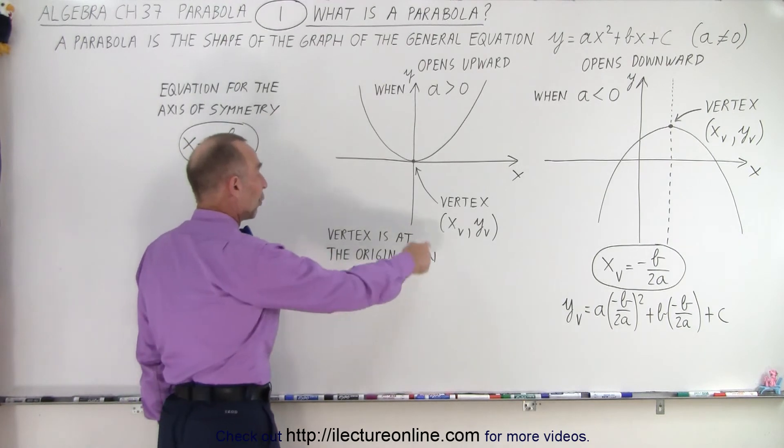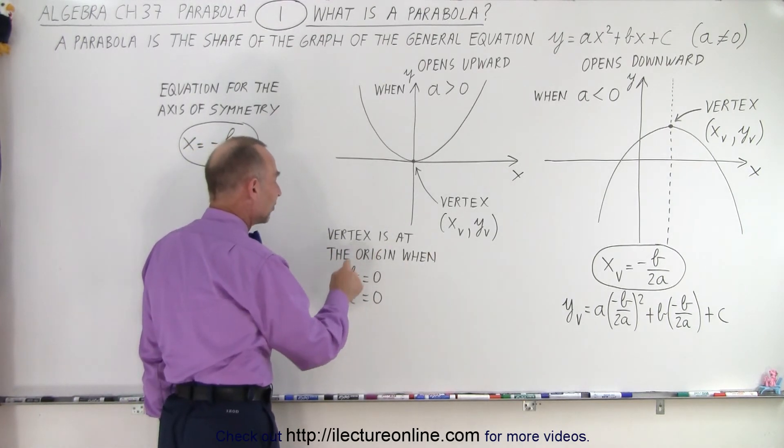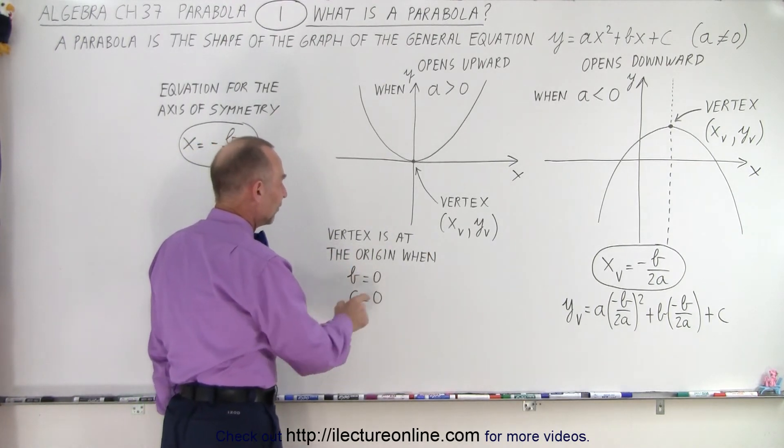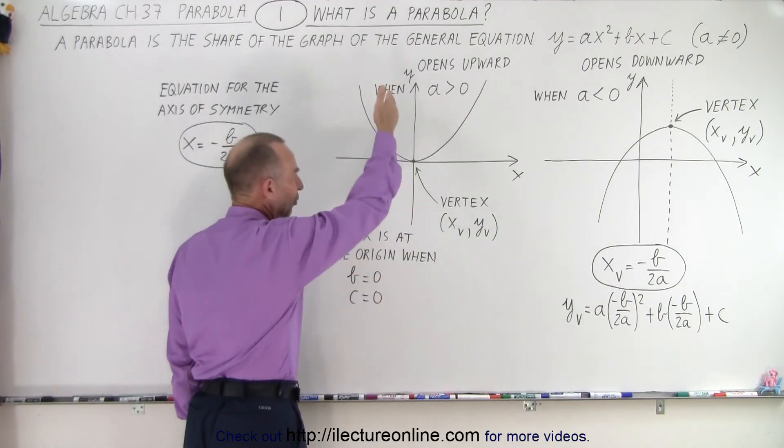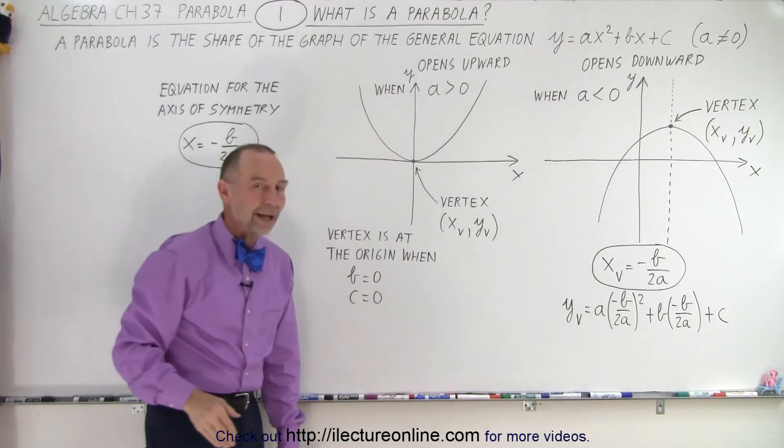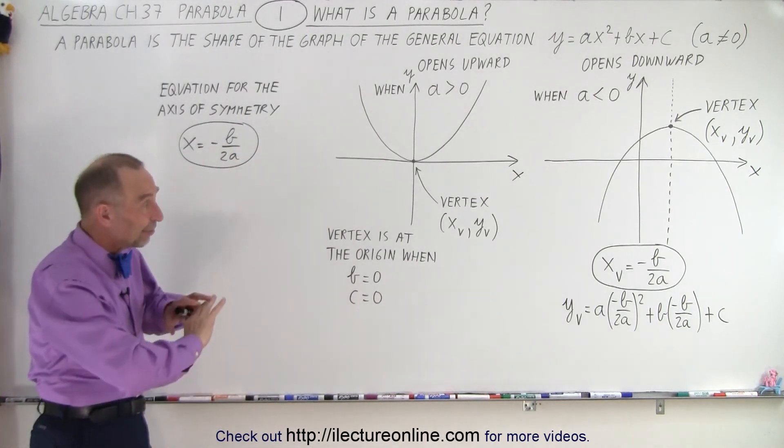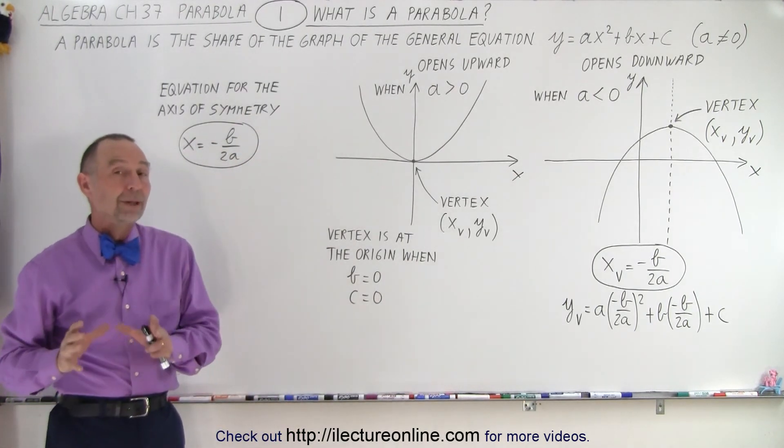Again, the vertex is at the origin when both b and c are equal to zero. If c is not zero, but b is zero, then the vertex will be somewhere on the y-axis. So at least that gives us an idea of what a parabola is.